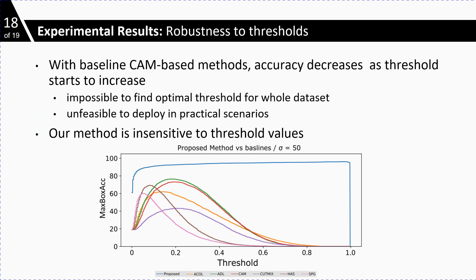We also did a sensitivity analysis to show that our method is not sensitive to the threshold. For baseline methods, we have to find an optimal threshold for each image in the dataset. Otherwise, their accuracy will start decreasing as we increase the threshold and goes towards zero. Compared to this, our method maintains the same performance over a wider range of thresholds, making it possible to deploy in real-time applications.